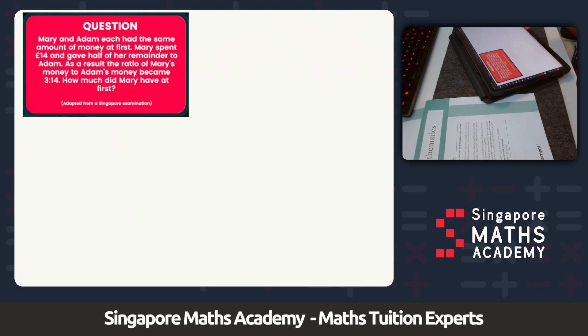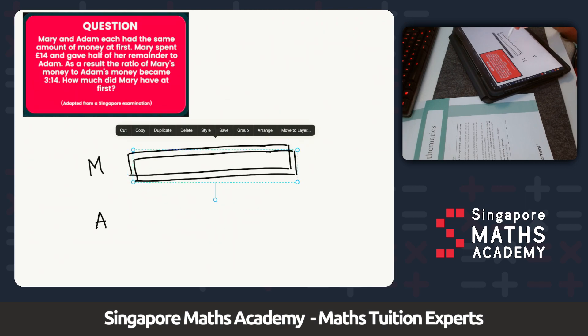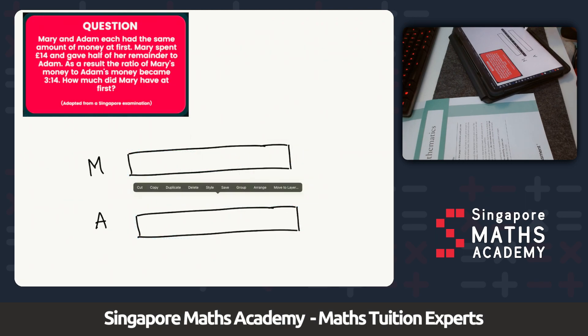Mary and Adam each had the same amount of money at first, so I'm going to write M for Mary, A for Adam, and draw a bar to show they have the same amount of money. I'm going to copy this bar and duplicate that so you can see they both have the same amount of money at first.